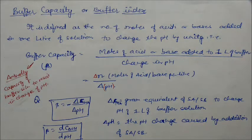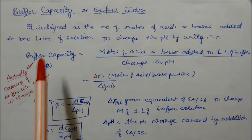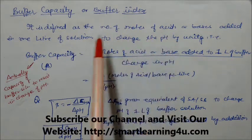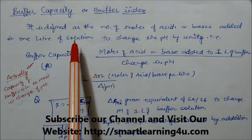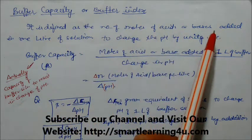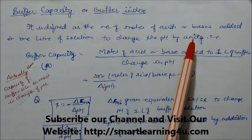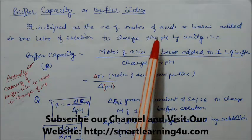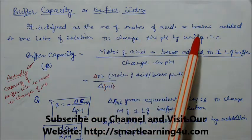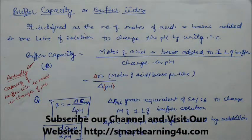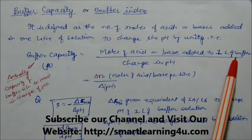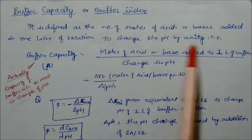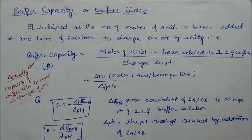In this session we will study the buffer capacity or buffer index of a solution. Buffer capacity is defined as the number of moles of acid or base that is added to one liter of solution to change the pH by unity. Buffer capacity is denoted by beta, and equals moles of acid or base added to one liter divided by the change in pH, which is by unity.